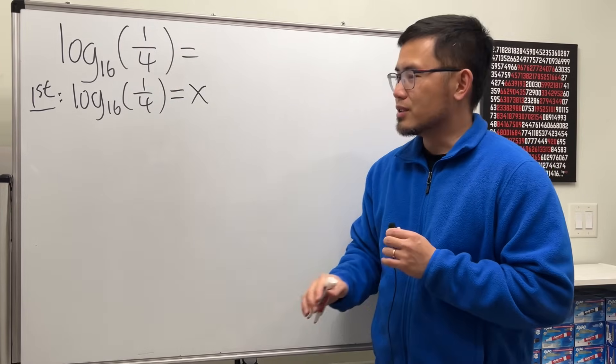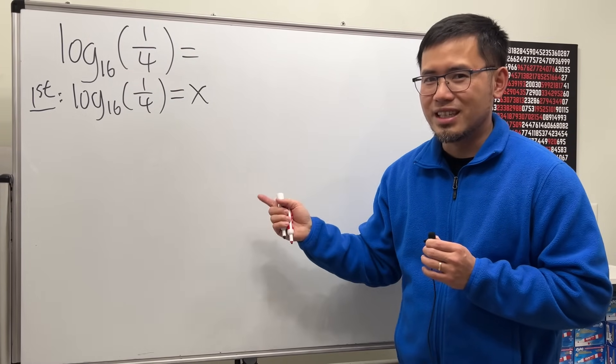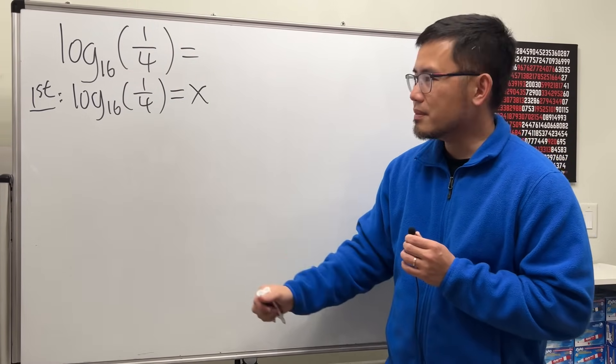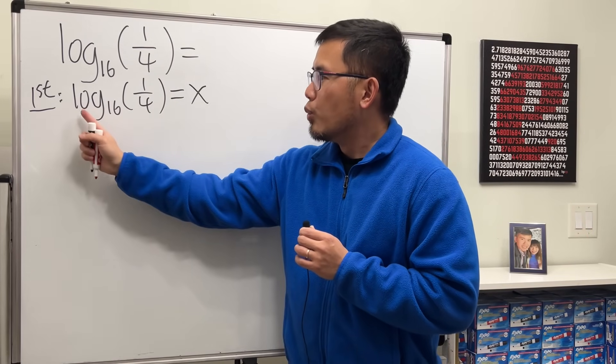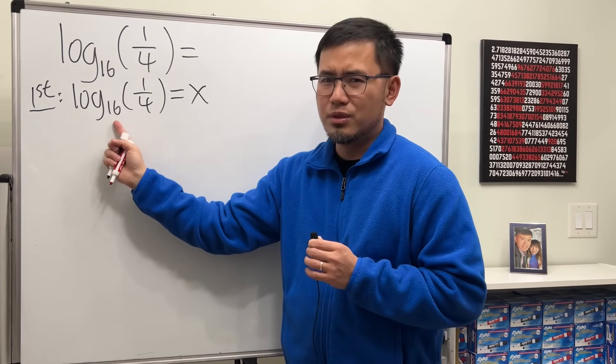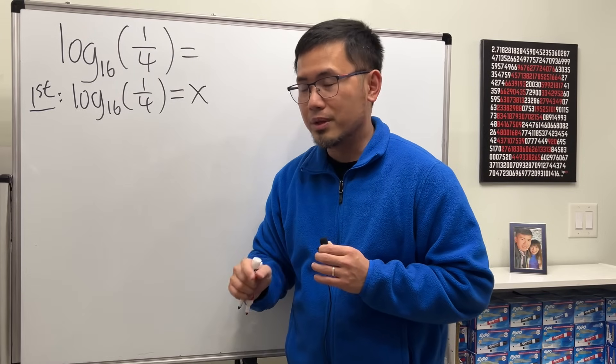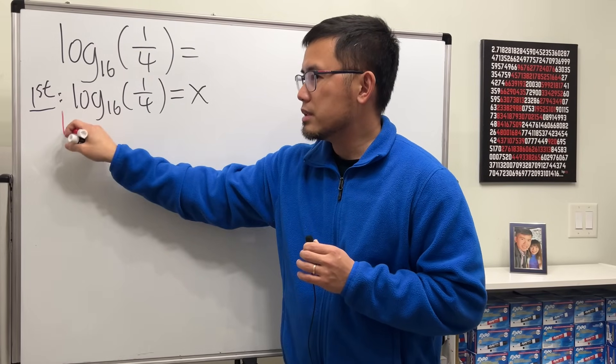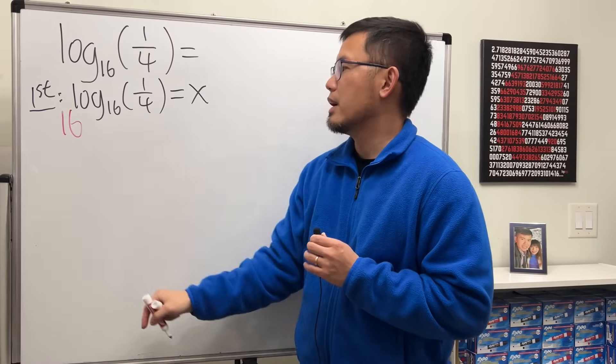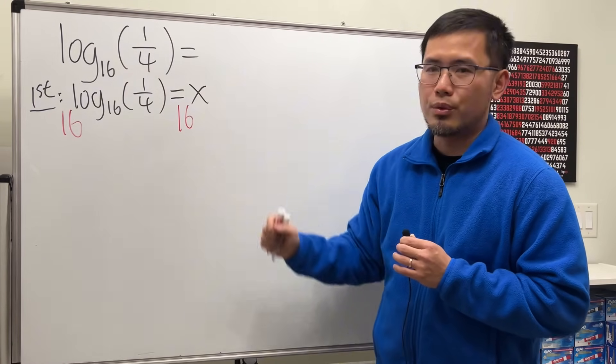That's confusing, huh? So let me show you a more systematic way to follow along. Have a look right here. Whenever you see log with this space right here, in this case is 16, just go ahead and do the following. Go ahead and do 16 to that power.